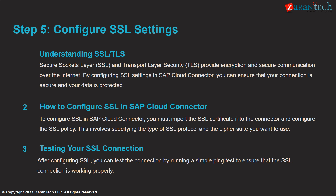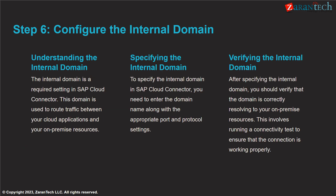Secure Sockets Layer encryption ensures your cloud connector connection is secure. Import the SSL certificate and specify your preferred SSL protocol and cipher suite. Test the SSL connection with a ping to check it is operational. The internal domain routes traffic between your cloud apps and on-premise systems. Specify your internal domain name, port, and protocol. Verify it correctly resolves to your on-premise resources by testing connectivity.